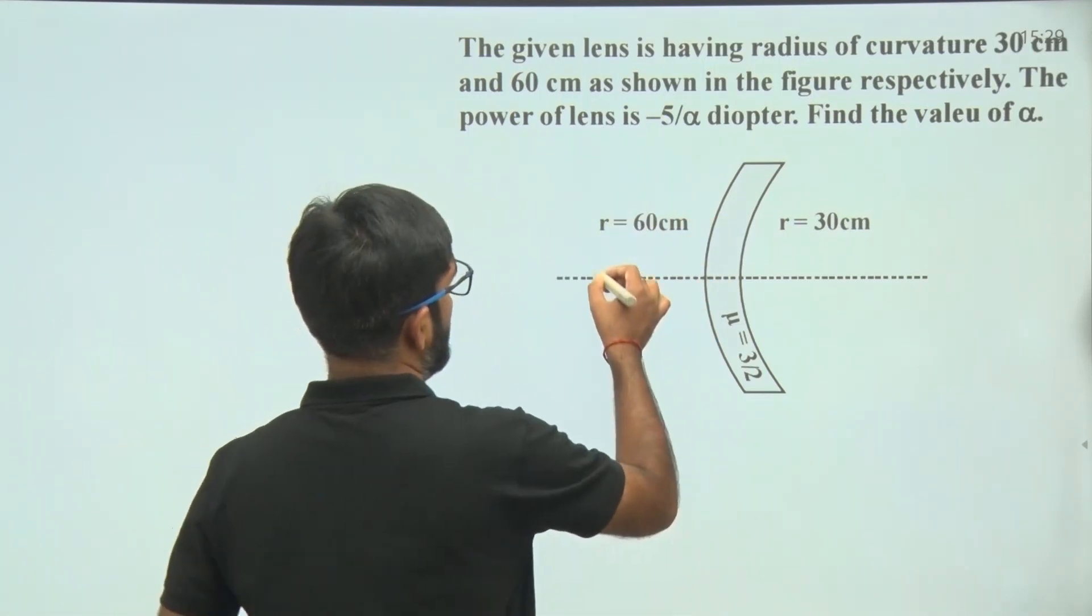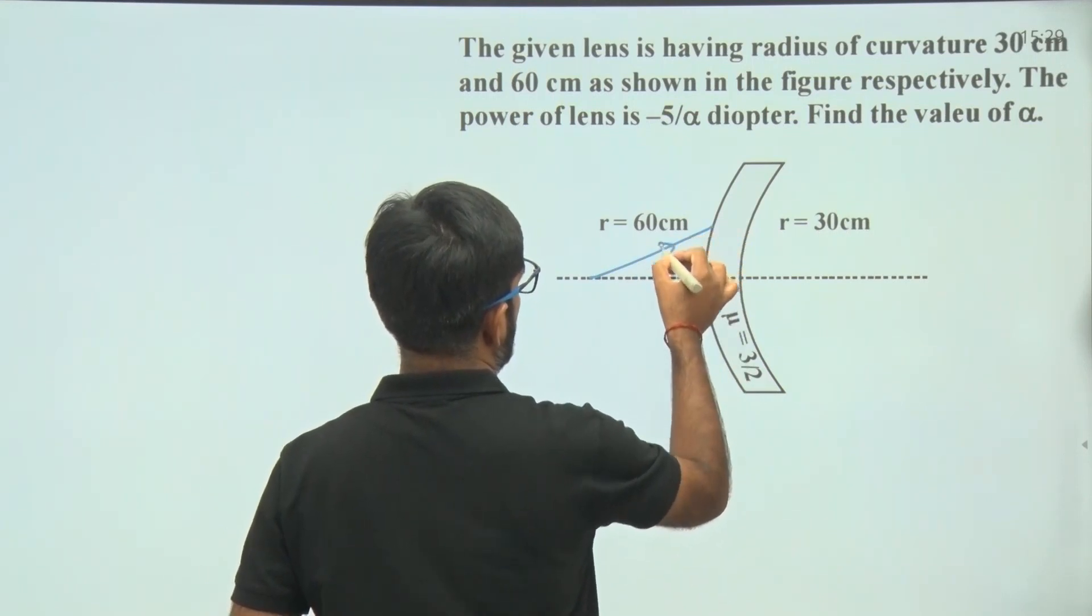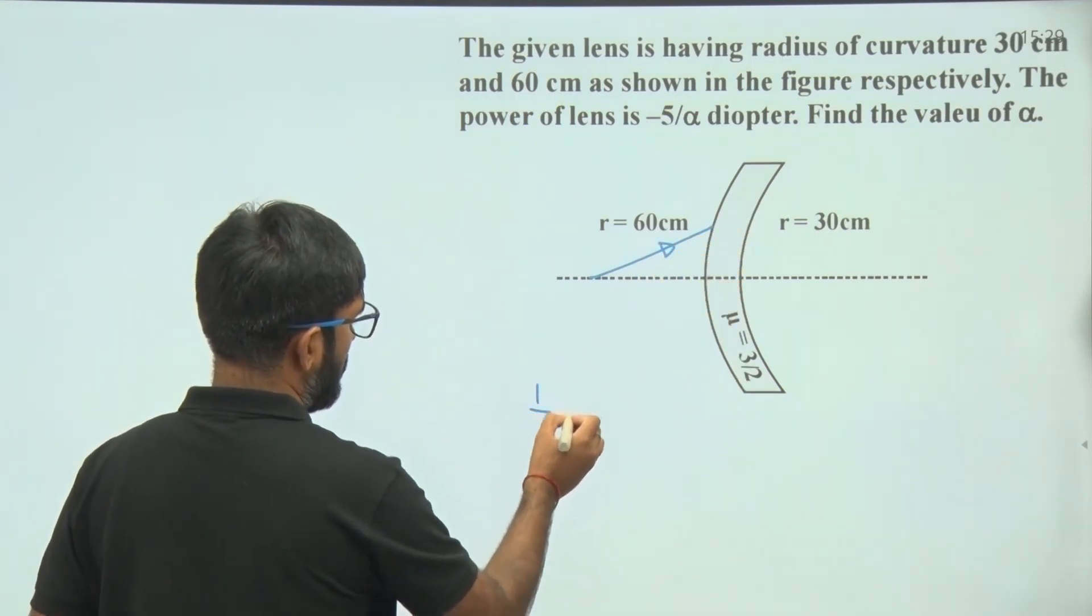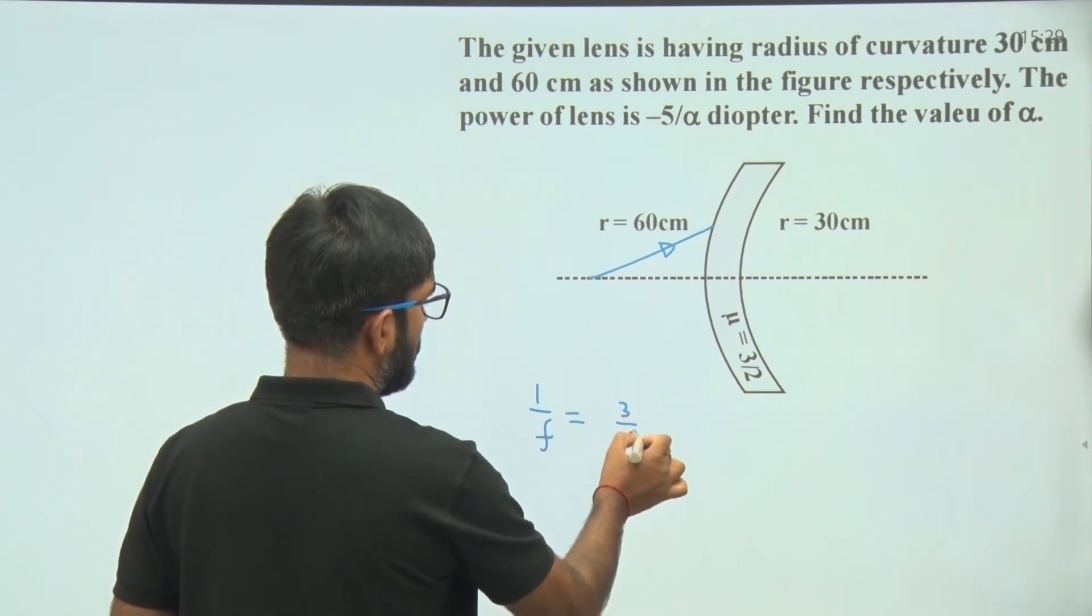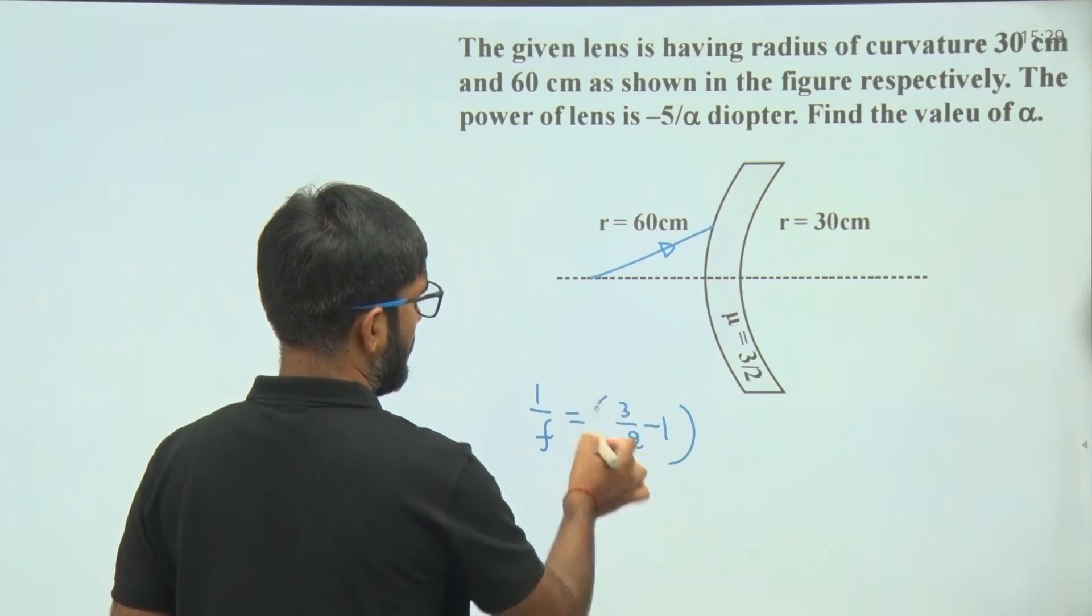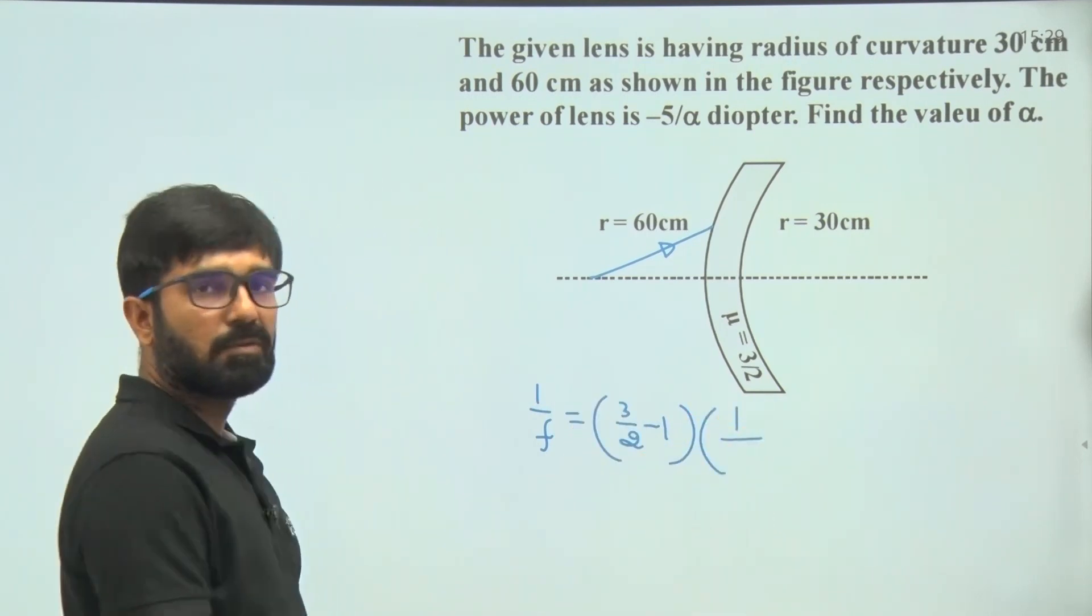Suppose light is incident from this direction. Then we use the formula 1 by f equal to mu minus 1, that is 3 by 2 minus 1, into 1 by r1 minus 1 by r2.